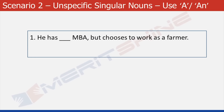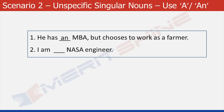Look at this sentence: He has dash MBA but chooses to work as a farmer. MBA would take AN as it is pronounced as a series of letters, and M sounds like 'em'. Hence we will need AN as the article. I am dash NASA engineer — NASA is pronounced as a word and not as a series of letters.